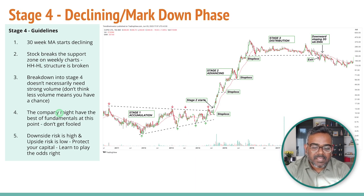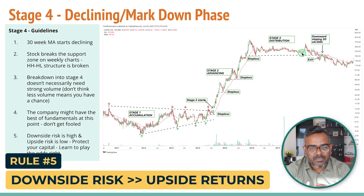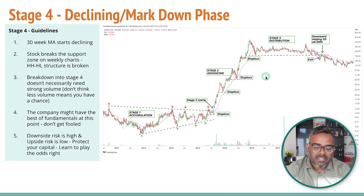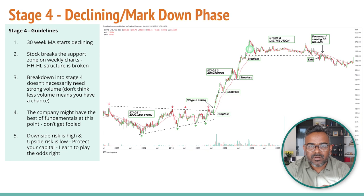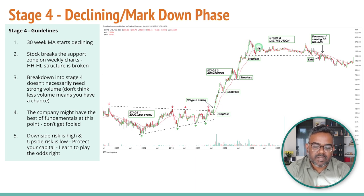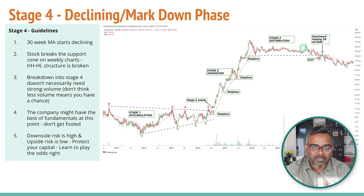The last point: when a stock has risen so much and is going sideways, the probability of the stock going down is much higher than the probability of it going up. For example, in the case of Cupid, the stock has already risen from 5 to almost 200 levels. If someone is buying at 200, that is pure stupidity, because you cannot expect the stock to go much higher from here.